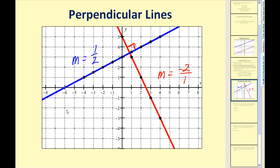The other check is to find their product. Positive 1/2 times negative 2 over 1 gives us negative 2 over 2, which is equal to negative 1. That's another way to check to see if lines are perpendicular.